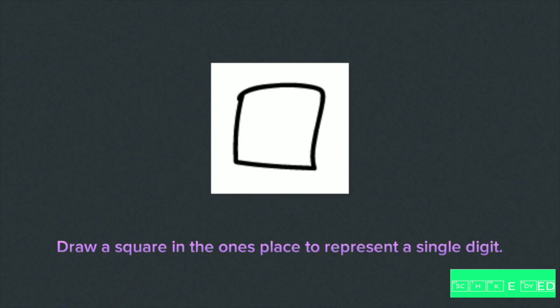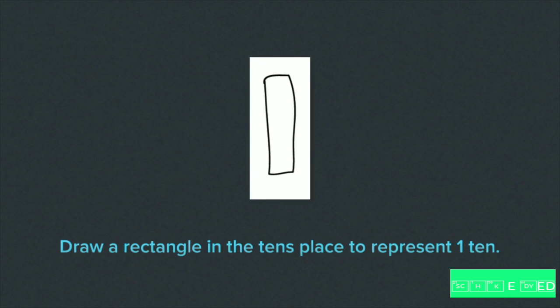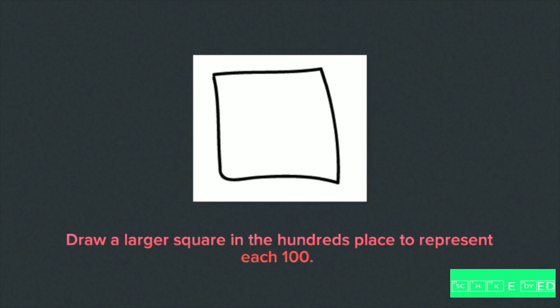Draw a square in the ones place to represent a single digit. Draw a rectangle in the tens place to represent a ten. Draw a larger square in the hundreds place to represent each 100.